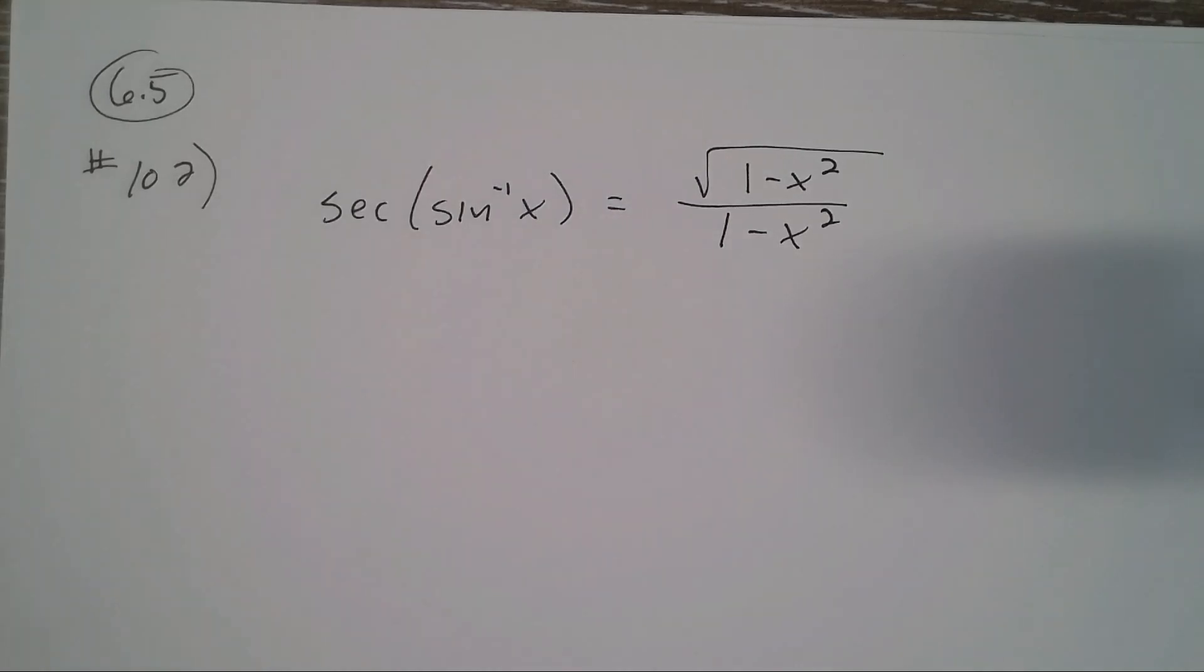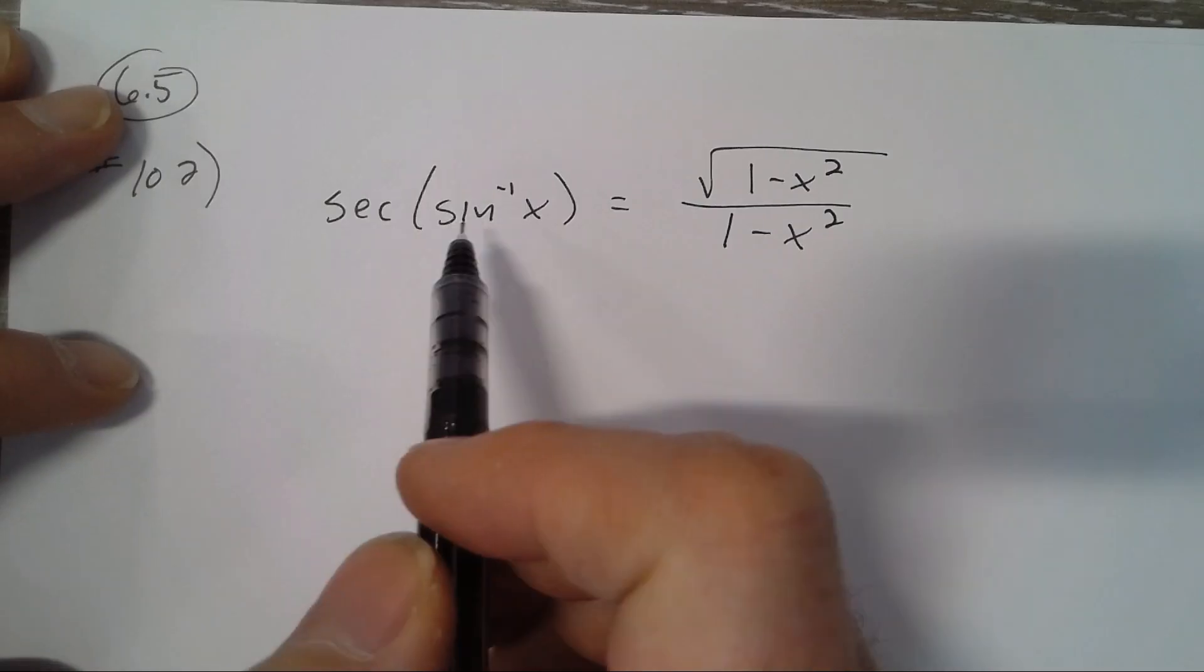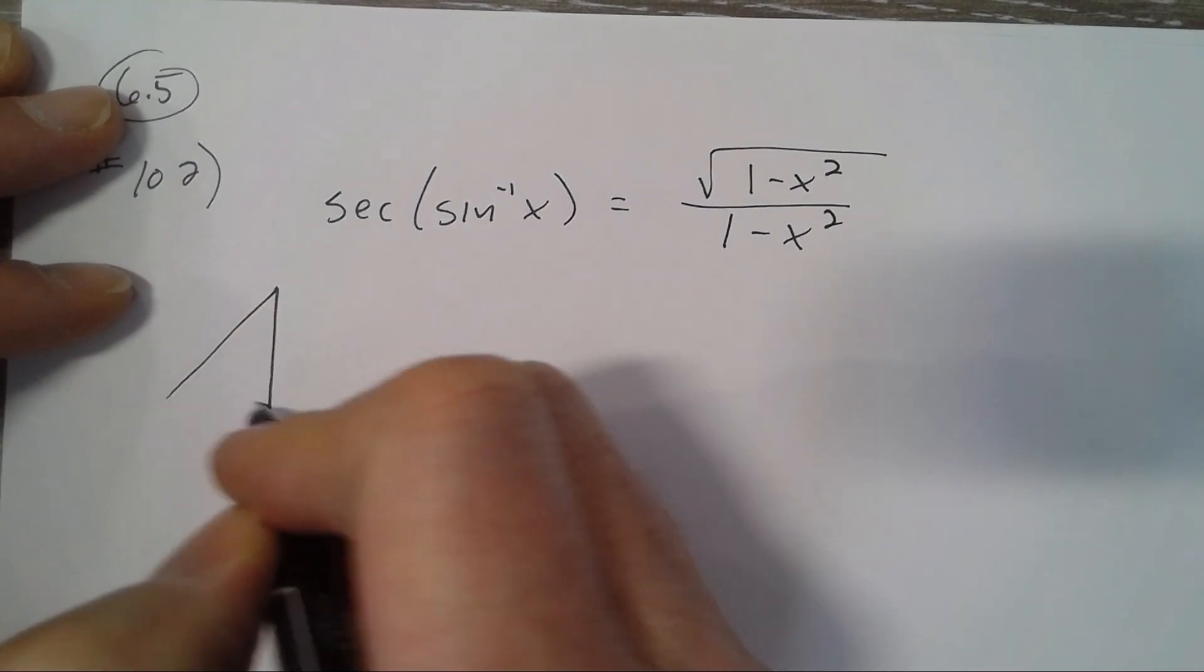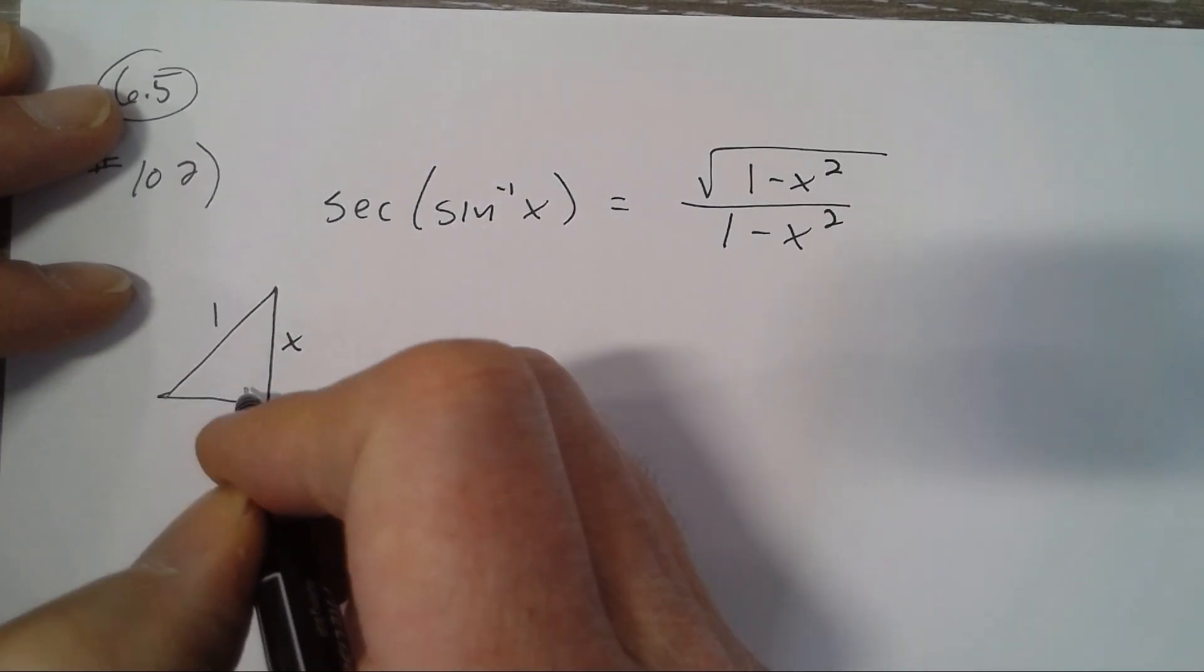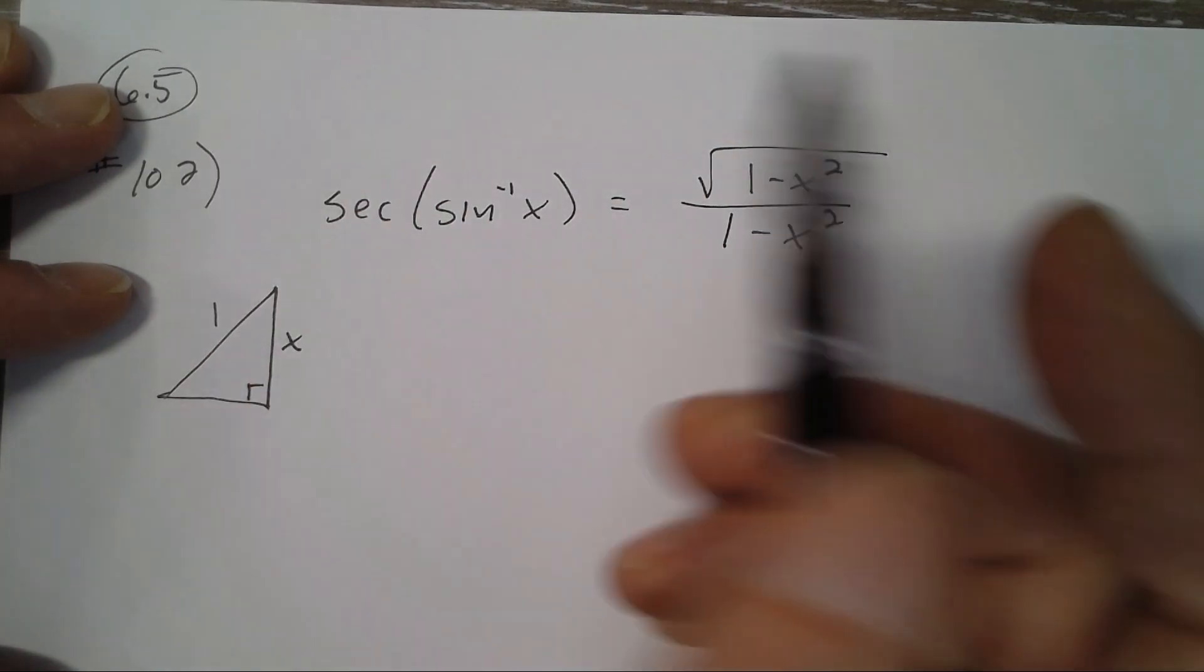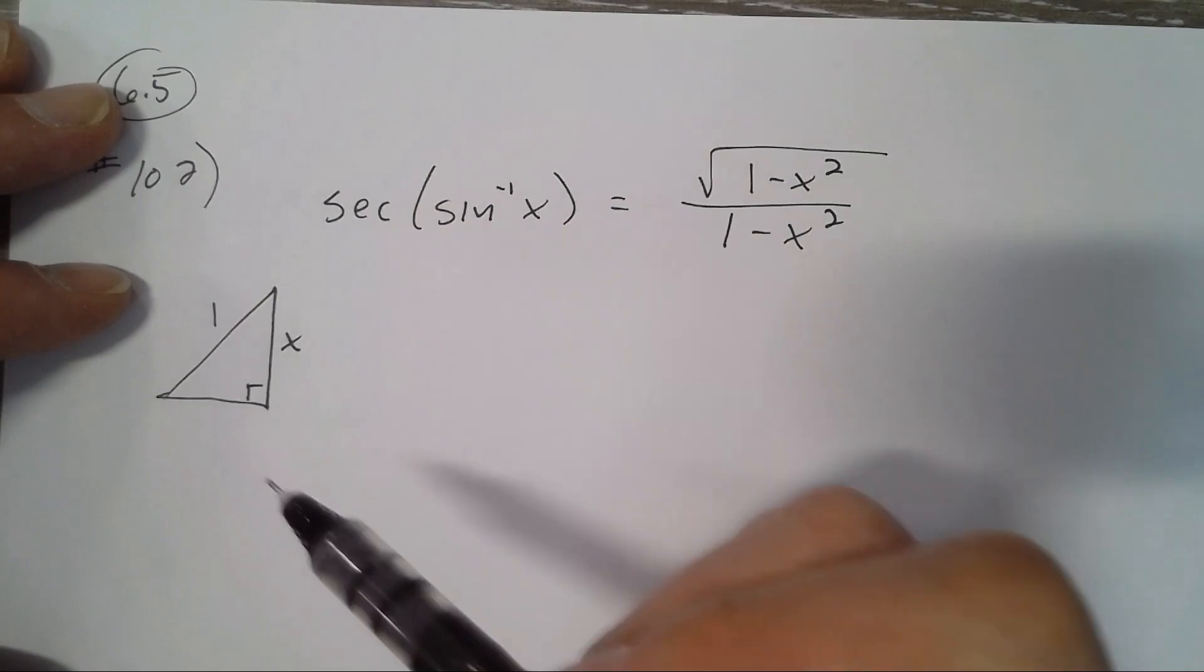Problem 6.5 number 102: we're supposed to verify the identity and work on the left side here. What angle has a sine of x? This angle right there has a sine of x because opposite over hypotenuse is x or x over 1, and we have to find the secant of it, which means we do need to know the adjacent.